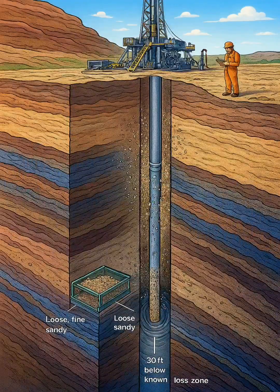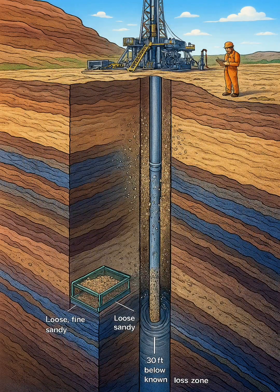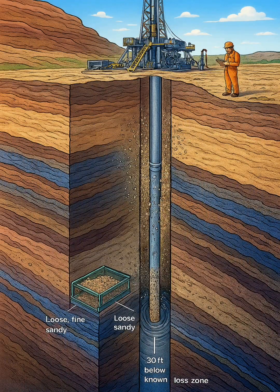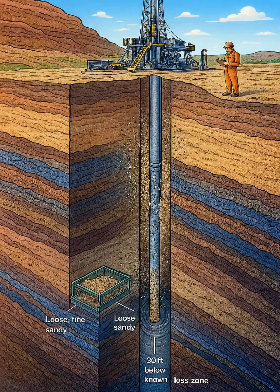After several more feet of drilling, torque and drag rise sharply and pump pressure increases, suggesting a restriction in the annulus. The driller stops rotation and attempts to circulate, but flow rate is restricted. Upon pulling out of hole a few stands, the string frees up and a large volume of sand and silt returns to surface.